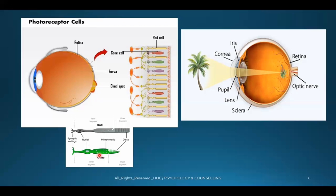The rod cells are for night vision and the cone cells are for color vision. In the image, rods are shown in gray because they relate to night vision, and cones are shown in green because they relate to color vision. You have to understand the retina and the optic nerve.